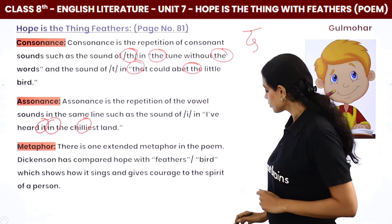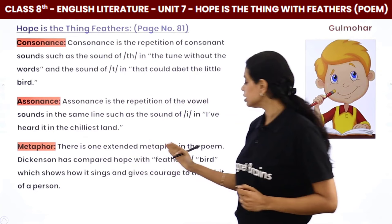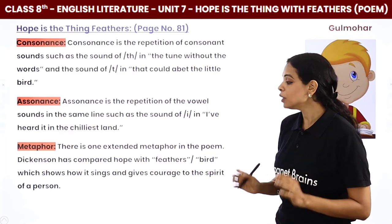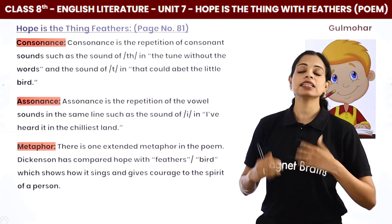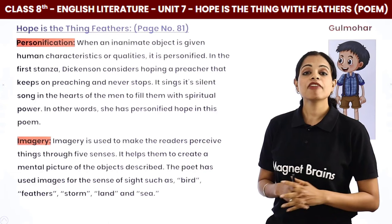Then we have metaphor. As we know, in this poem hope is metaphorically compared to a bird throughout the entire poem. There is one extended metaphor in the poem. Dickinson has compared hope with feathers — a bird — which shows how it sings and gives courage to the spirit of a person. This is called an extended metaphor.